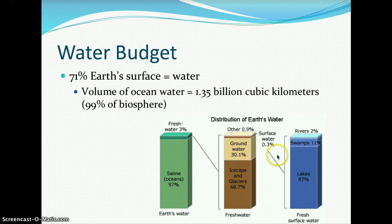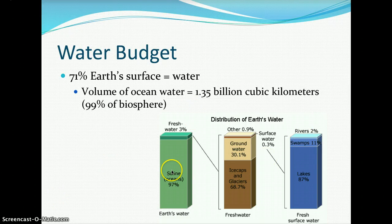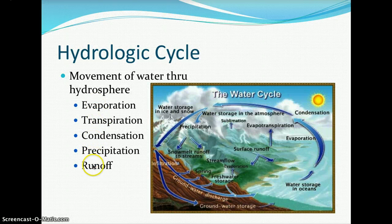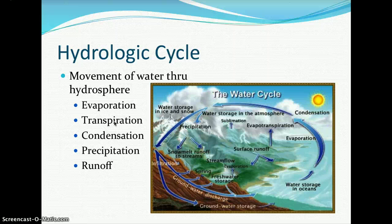Of the 0.3% of surface water, 87% is in lakes, 11% in swamps, and 2% in rivers. Since we are focused on oceanography, we examine the 97% that is saltwater. When discussing the movement of water through the atmosphere, land, and organisms, we look at the water cycle — or hydrologic cycle. It has five main components, starting with evaporation: when water transitions from a liquid to a gas. Transpiration is a special type of evaporation where plants release water vapor to the atmosphere.